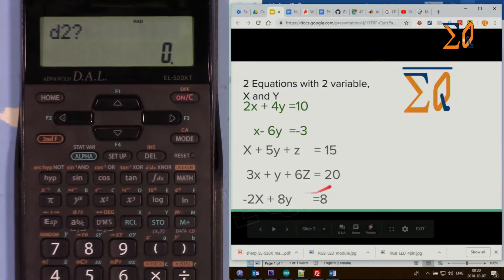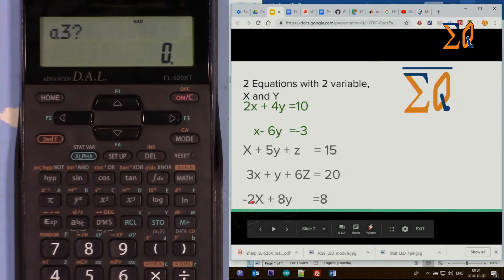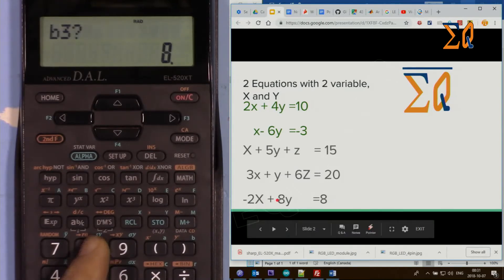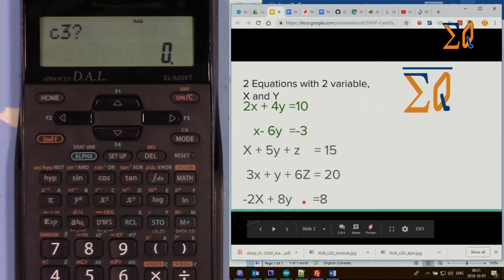Now we are at a3, enter minus 2 equal sign, 8 equal sign, z is 0, make sure enter the z and 0 and equal sign, and d is minus 8 and equal sign. Now it gives you x, press equal sign it gives you y, press it again it gives you z, and it shows the determinant.